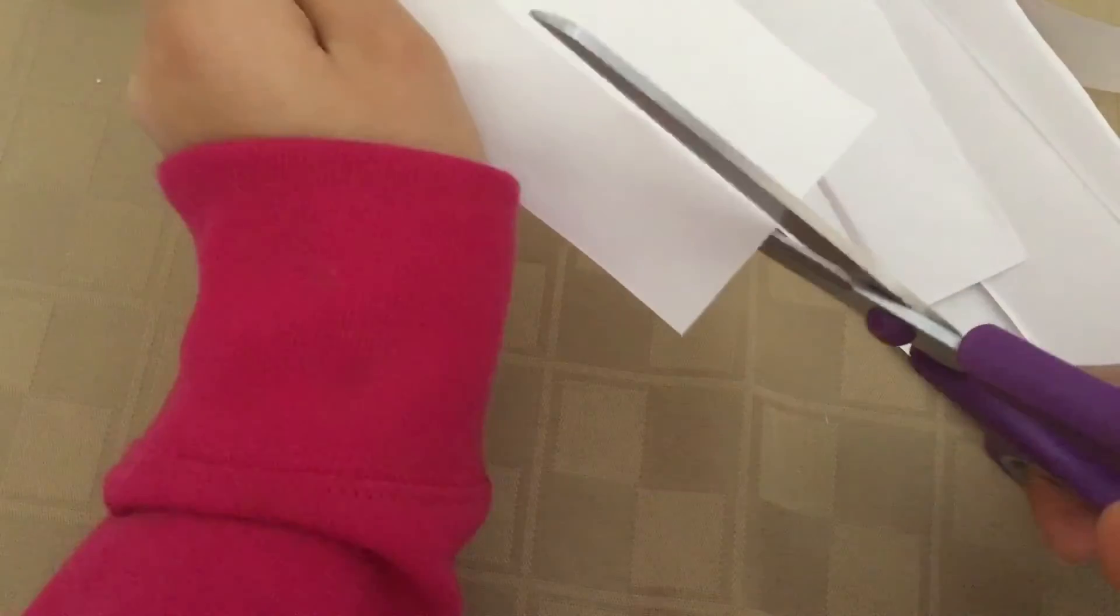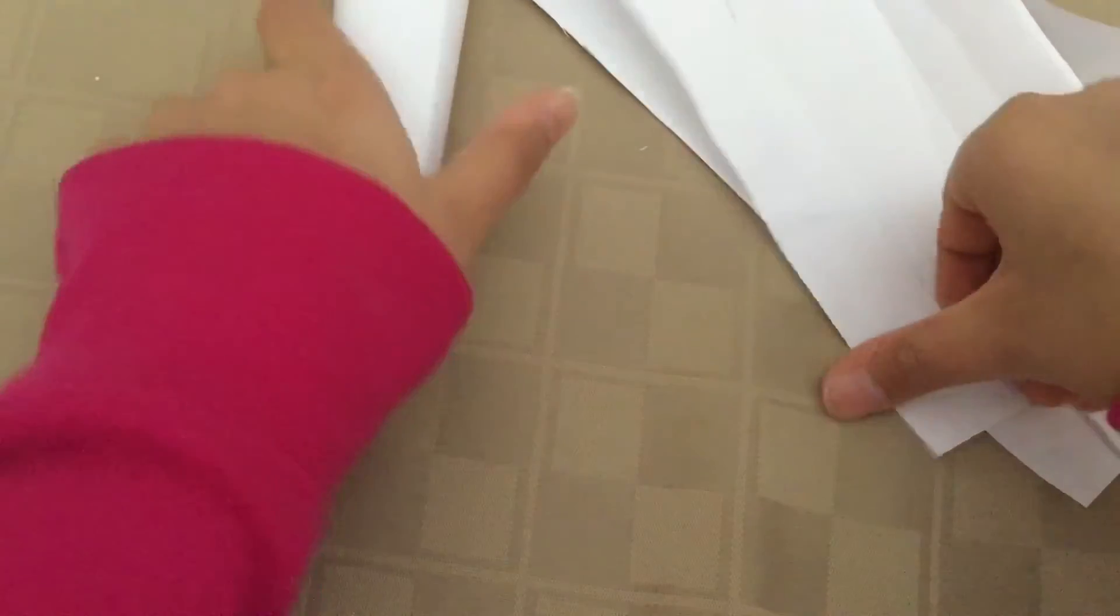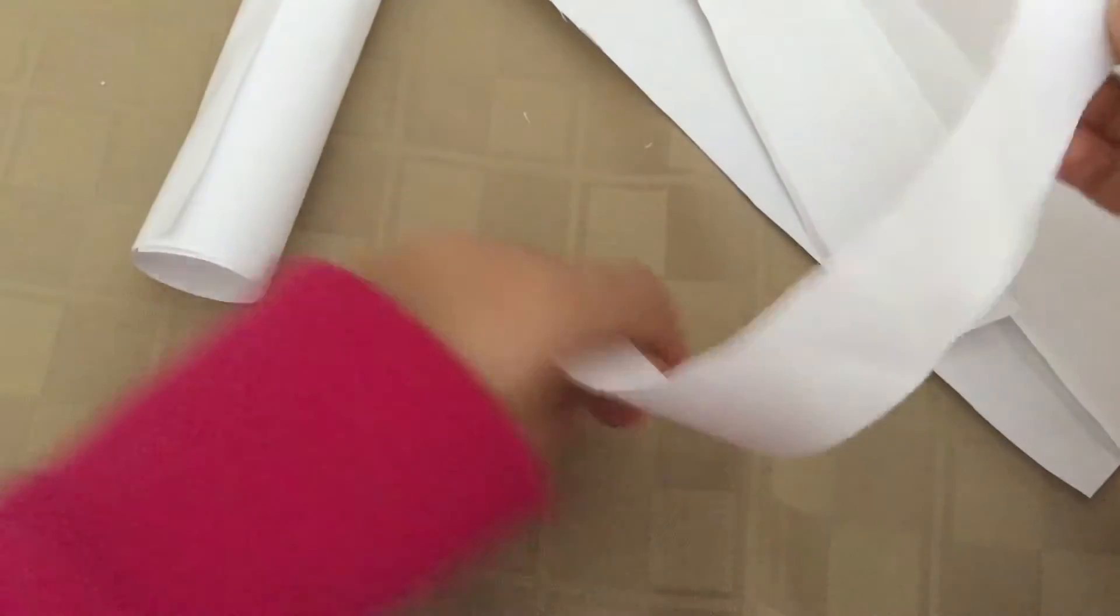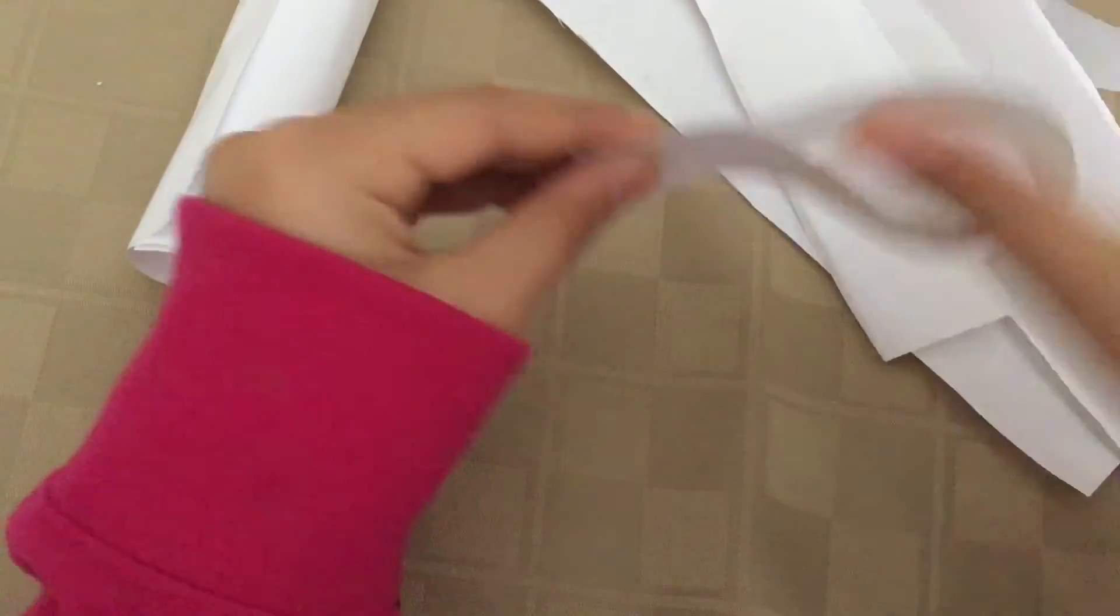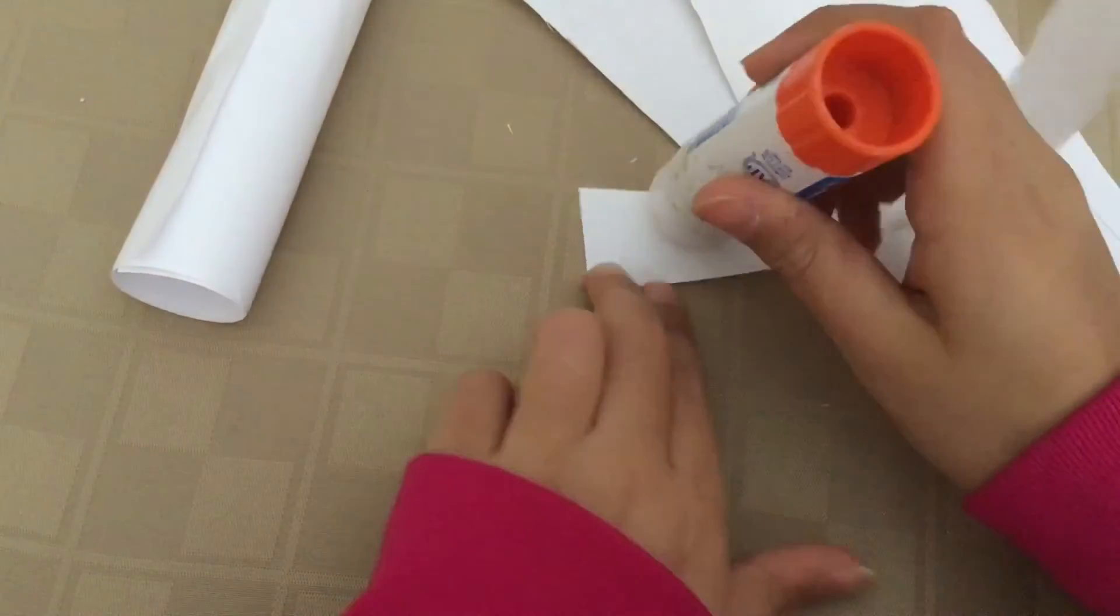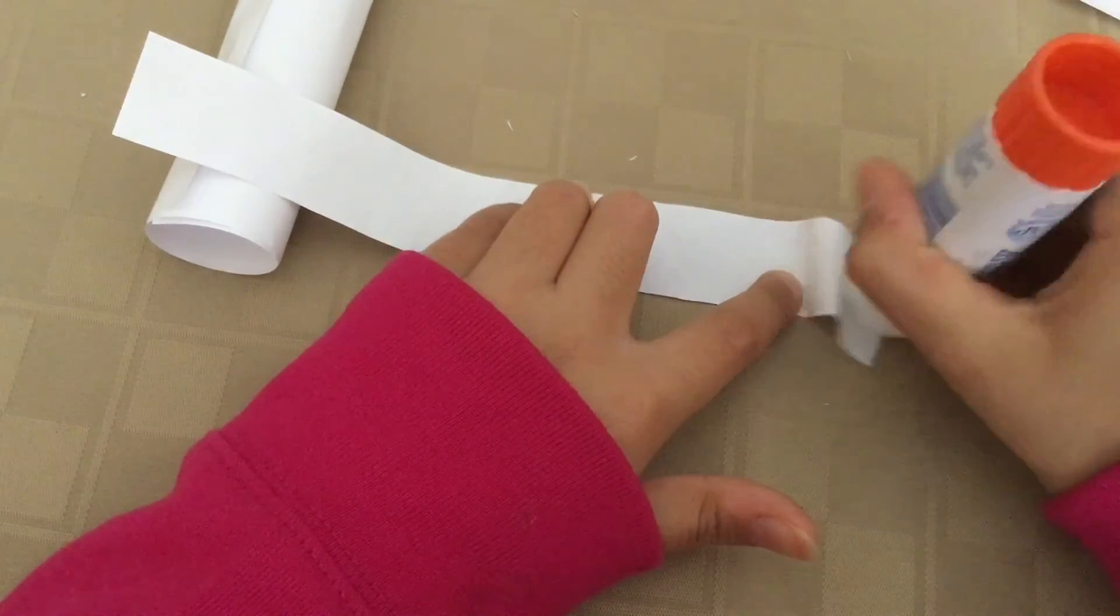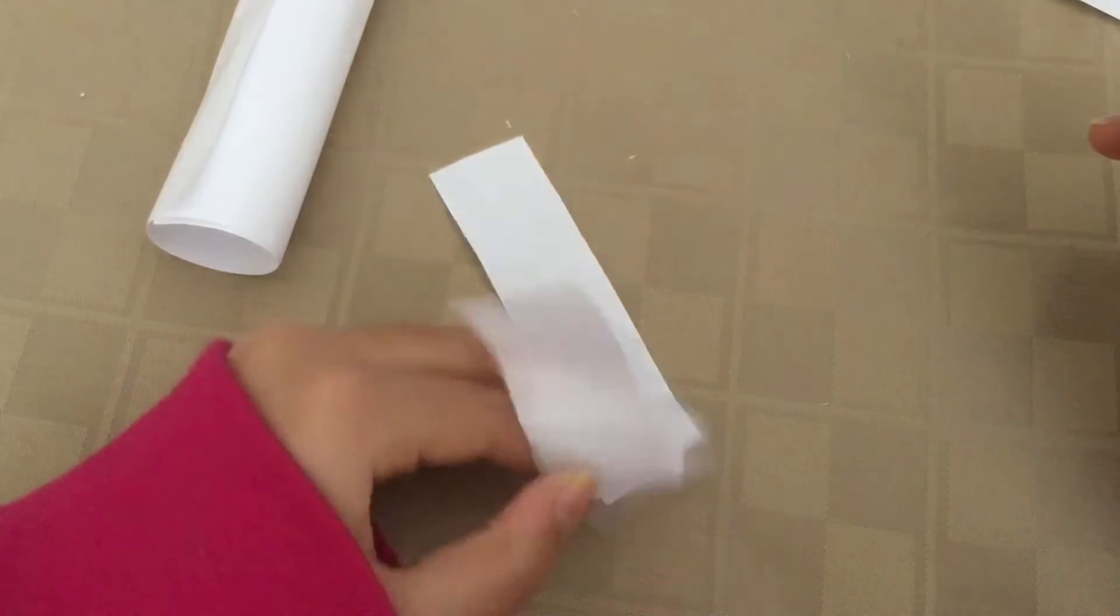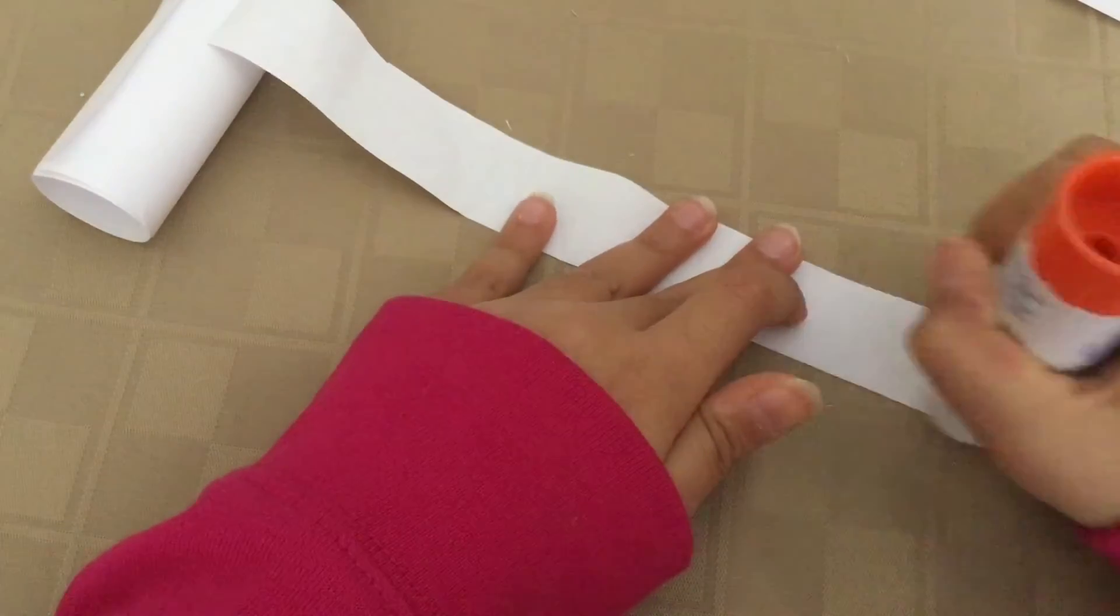Once you are done cutting out all of these paper strips, you are going to take one of them and fold it in half like this to where both of the edges line up, and then it should make that little loop. I want you to put some glue, a little bit on the end and then a little bit on the other end.